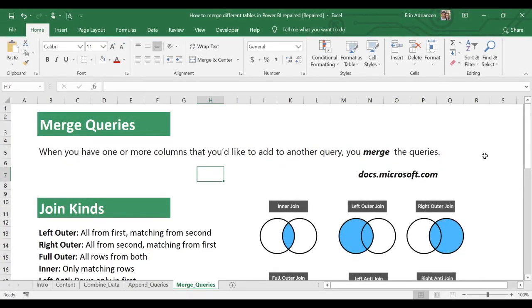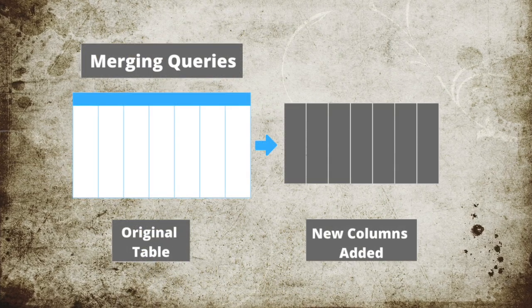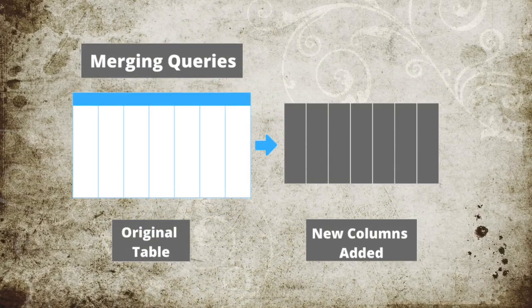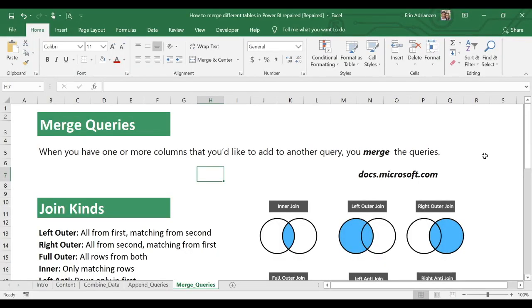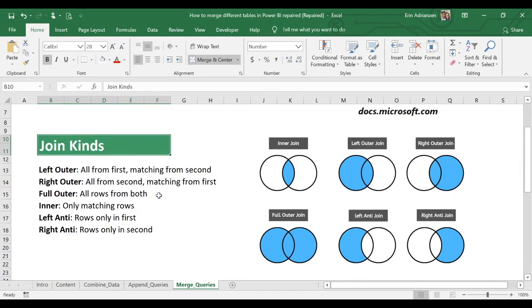Now let's talk about the main purpose of this tutorial: how to merge queries. When you have one or more columns that you'd like to add from another query, you merge the queries. It's that simple — if you want more columns from different tables, use the merge option.